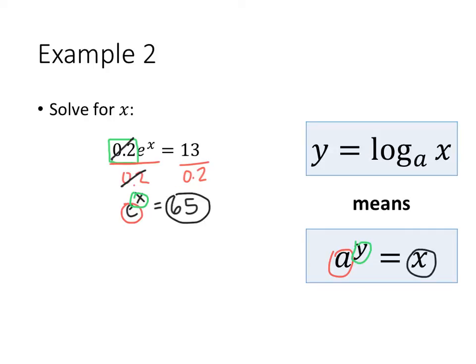So when I rewrite this in logarithmic form, I get y equals log base a of x, which in this case is going to be x equals the log base e of 65.